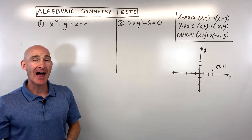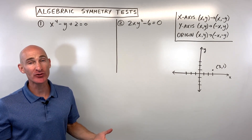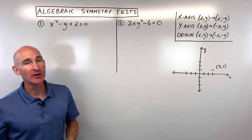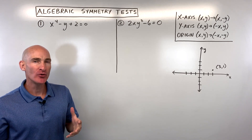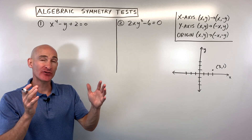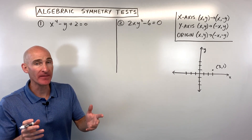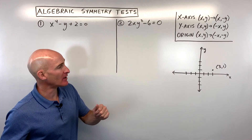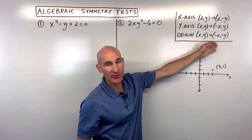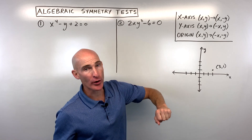In this video, you're going to learn the algebraic tests for symmetry, and we're going to go through five examples together. How do you test an equation to see if the graph is going to be symmetric about the x-axis, the y-axis, or the origin? We've got some rules here that you might want to make note of, but I want to show you why they work.